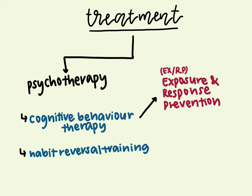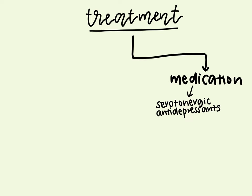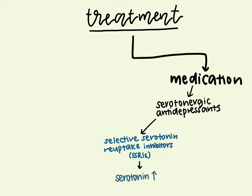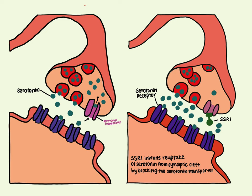A type of CBT technique called Exposure and Response Prevention (ERP), in which patients spend time in the very situation that triggers compulsions but are then prevented from undertaking the usual resulting compulsion, can be effective in reducing compulsive behaviors even in people who did not respond well to medication. Serotonergic antidepressants such as selective serotonin reuptake inhibitors, also known as SSRIs, tend to be the main form of medication for OCD patients. These medications usually take months to start working, but most patients eventually benefit from them. SSRIs improve OCD symptoms by increasing the levels of serotonin in the brain, working by inhibiting the reuptake of serotonin — a neurotransmitter that stabilizes mood, feelings of well-being, and happiness — from the synaptic cleft back to the presynaptic neuron by blocking the serotonin transporter, therefore increasing serotonin levels in the synaptic cleft.